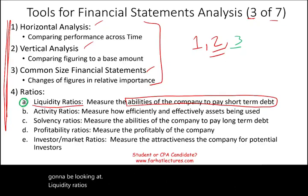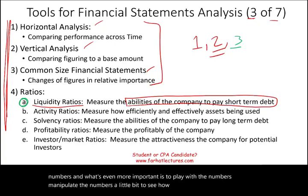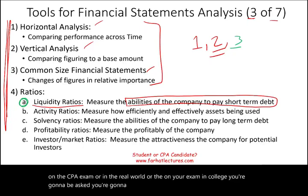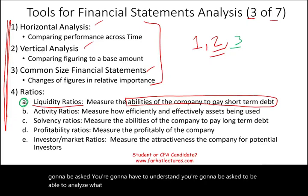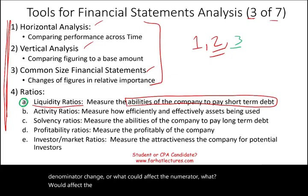The best way to explain the ratios is to actually look at numbers, and what's even more important is to play with the numbers, manipulate them a little bit to see how they affect the ratios. Because on the CPA exam, or in the real world, or on your exam in college, you're going to have to understand and analyze what happened if the numerator or the denominator changed, or what could affect the numerator, what could affect the denominator.